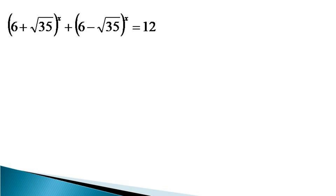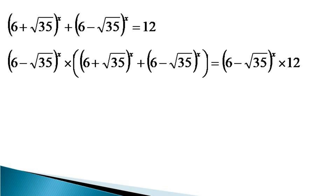So when they are multiplied with each other, they will become rational terms. We multiply the whole equation by (6 minus √35) raised to the power x — that is the second term on the left hand side — to get another equivalent equation, with (6 minus √35)^x multiplied into the whole left hand side being equal to (6 minus √35)^x times 12.